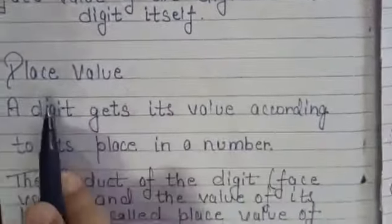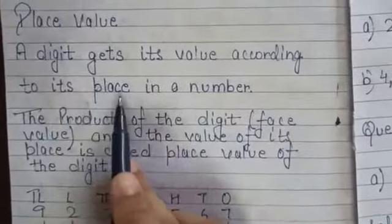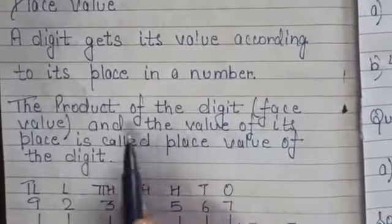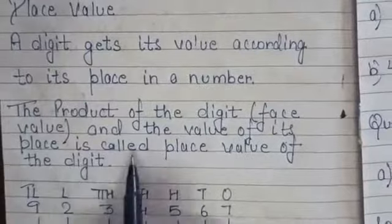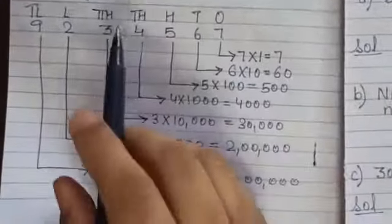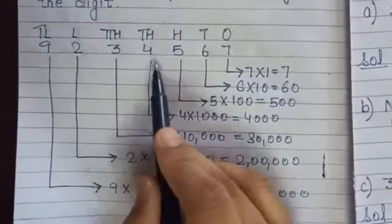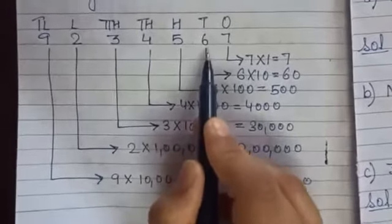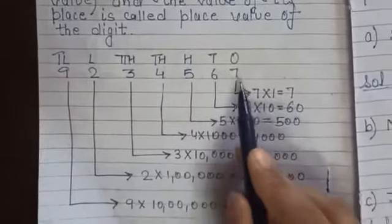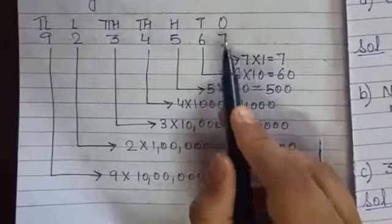Now the next topic is place value. A digit gets its value according to its place in a number. The product of the digit and the value of its place is called the place value of the digit. For example, you are given the number 92,34,567, and you have to find the place value of every digit. The first digit from the right is 7, and its place value is 1.